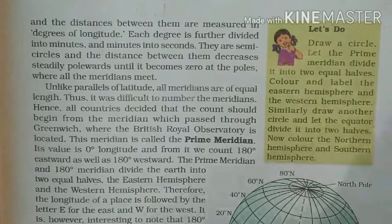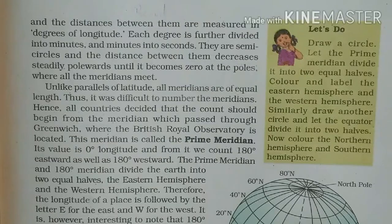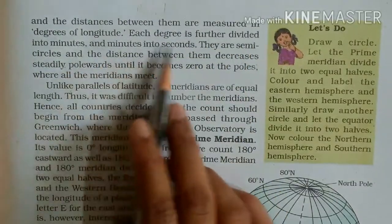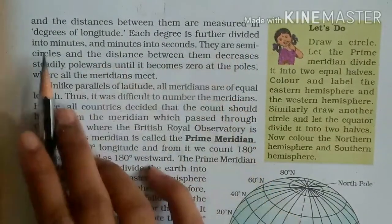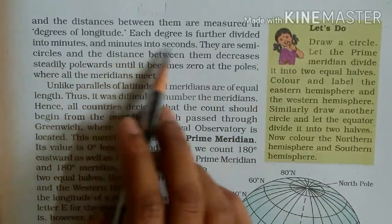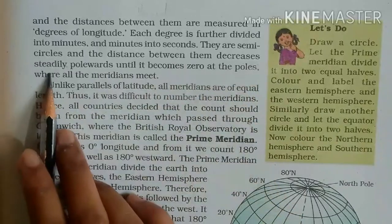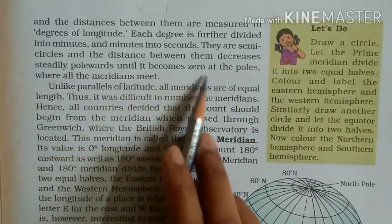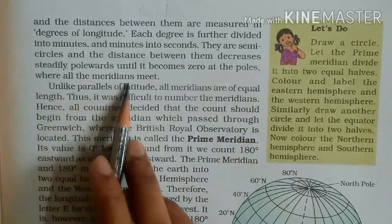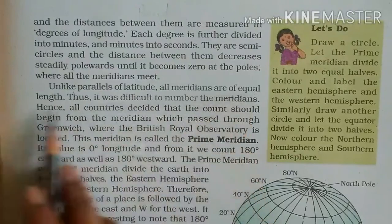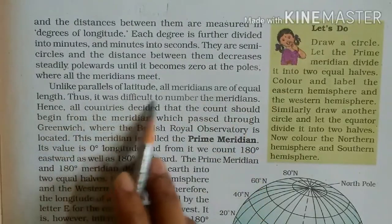Hello students, we are reading Lesson 2: Globe, Longitudes and Latitudes of Geography. The distance between them are measured in degrees of longitude. Each degree is further divided into minutes and minutes into seconds. They are semicircles and the distance between them decreases steadily polewards until it becomes zero at the poles where all the meridians meet.